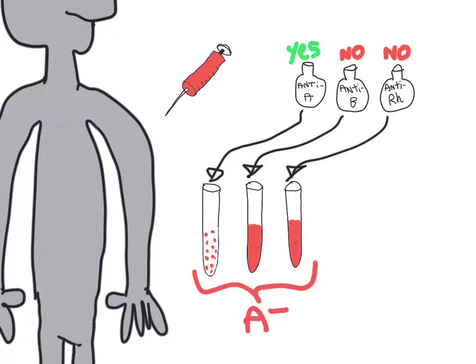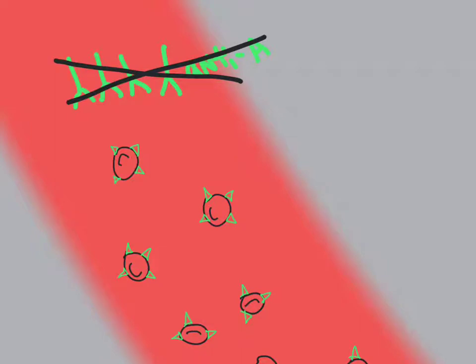Next, we would like to determine what types of blood we can give this patient who has A negative blood. To do that, we must consider what antibodies this patient would have in their bloodstream to begin with. These are the same types of antibodies that we used as tools to determine the patient's blood type. Because this patient has A negative blood, that means they have the A antigen, and they must therefore not have anti-A antibodies already in their blood plasma.